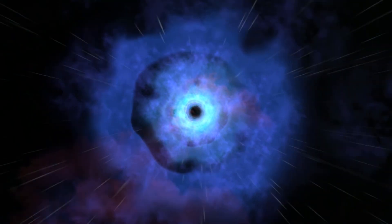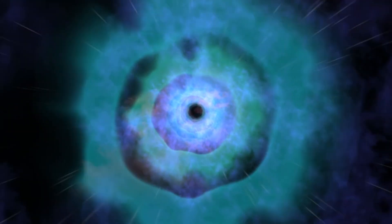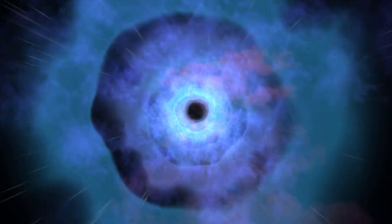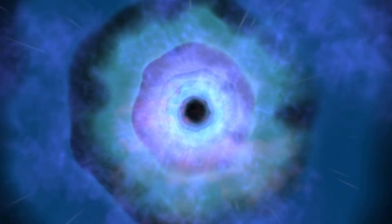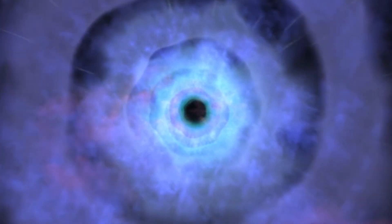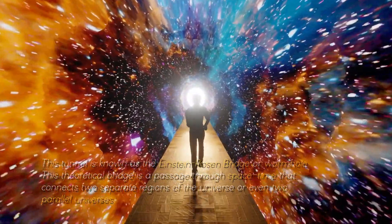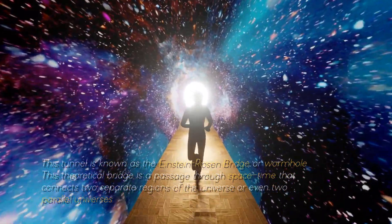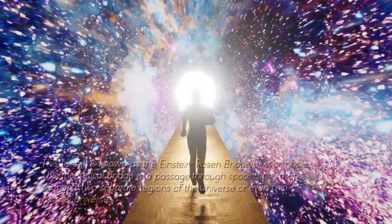You're probably wondering what lies beyond the third layer called the singularity, right? The idea is that, instead of being crushed by falling into a black hole, one would be sucked through a tunnel through the ring of fire and emerge through a white hole somewhere else in a parallel universe. This tunnel is known as the Einstein-Rosen Bridge, or wormhole. This theoretical bridge is a passage through space-time that connects two separate regions of the universe or even two parallel universes.